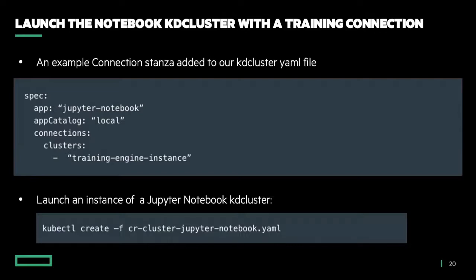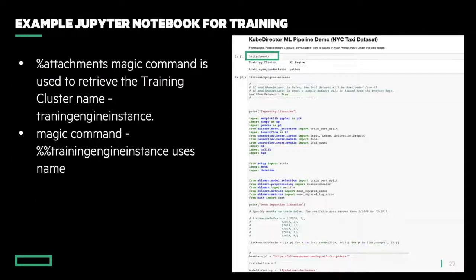Removing a lot of headaches here, especially noting the connection stanza within this Jupyter Notebook YAML file that literally connects the Jupyter Notebook cluster to the training engine instance. This is a snapshot of the Jupyter example that comes out of the box with KubeDirector. We have extended the concept of magics in a notebook. Using the attachment magic, you know what connections exist for this notebook and what training cluster you can submit your code to. Once you have that, you just take the name of the training cluster. Your entire machine learning Python code doesn't have to change — only the first line, because you want it to run remotely and not locally.